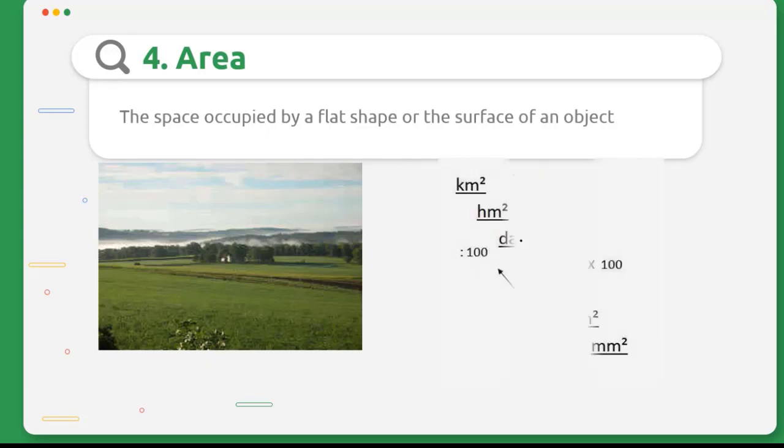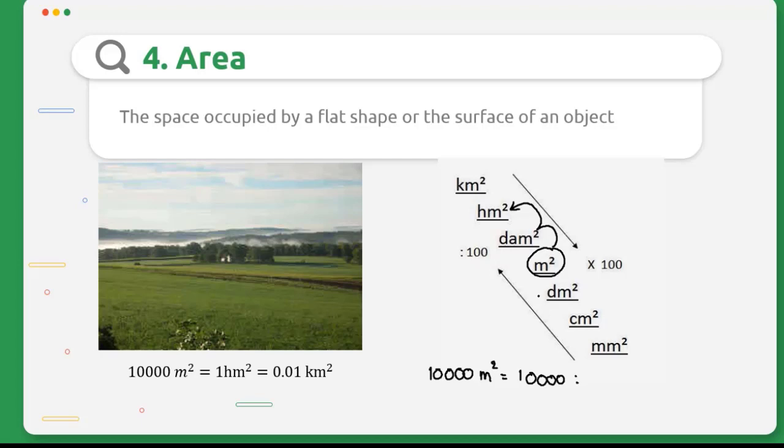If we want to convert the area of this land from 10,000 m² to hectometer square, we go up two steps. Because the index is square, for one step up we divide by 100. Two steps means we divide by 10,000. So 10,000 m² divided by 10,000 equals 1 hectometer square.